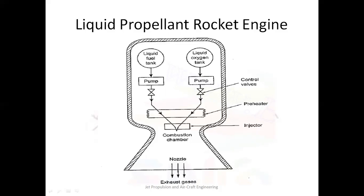Liquid fuel and liquid oxygen are pumped separately into a combustion chamber through control valves, as shown in the diagram. Since the liquid fuels and liquid oxygen are stored at very low temperature, they are preheated in the preheater to a suitable temperature. They are stored in liquid form at very low temperature and must be preheated before being injected into the combustion chamber.